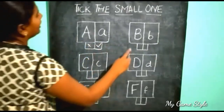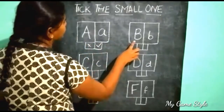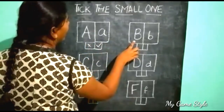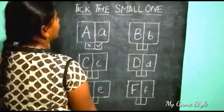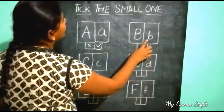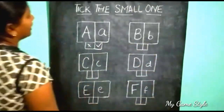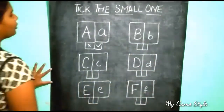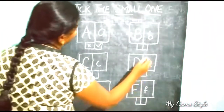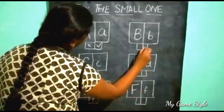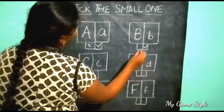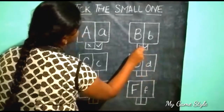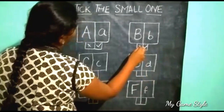Here, this is a big one and this is a small one. So we need to tick the small one. This is wrong.